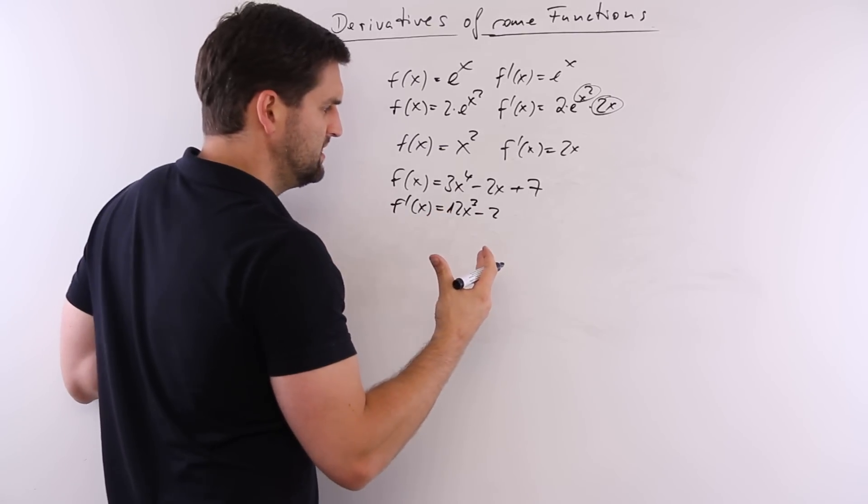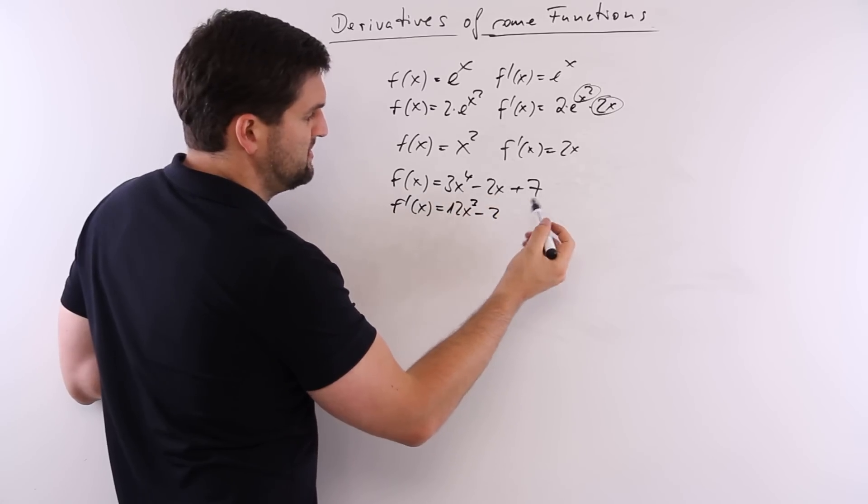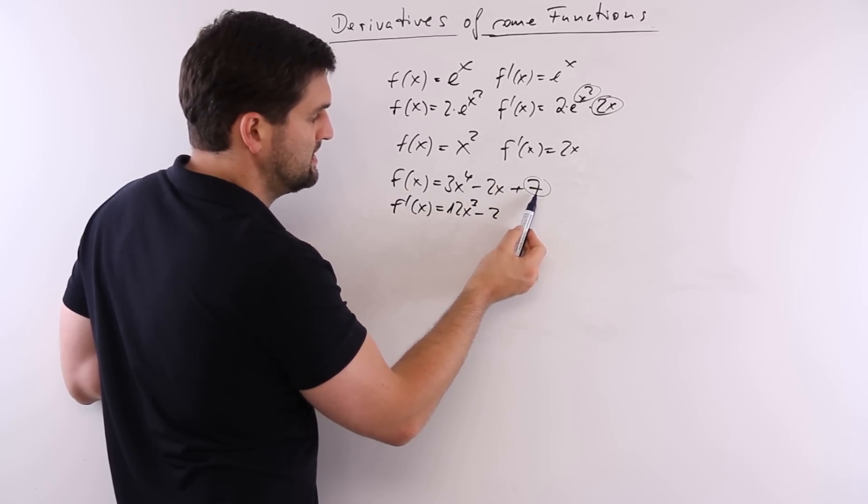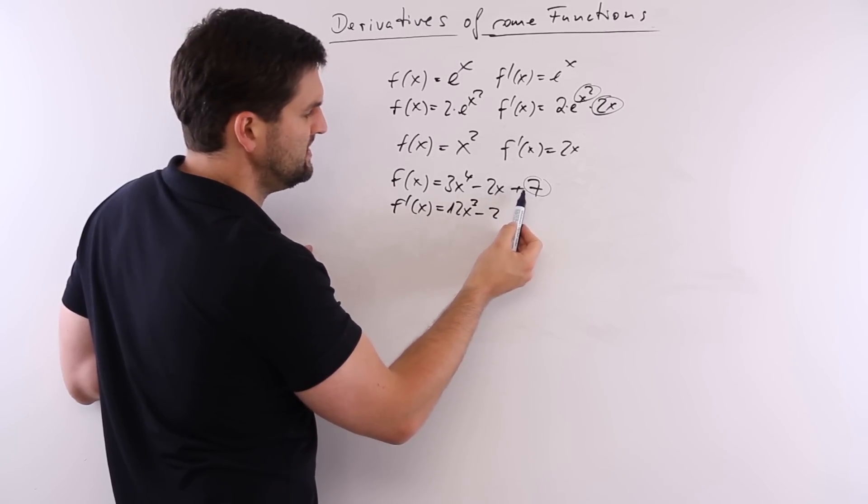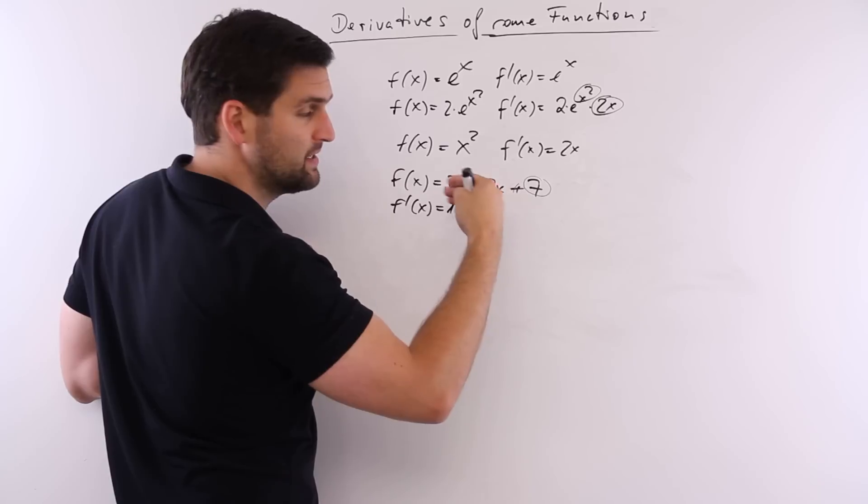A lot of people are asking, what about the 7? The 7 is just the number, but it's not in the multiplication with x. It's just plus or minus. So, you can say it's going away.